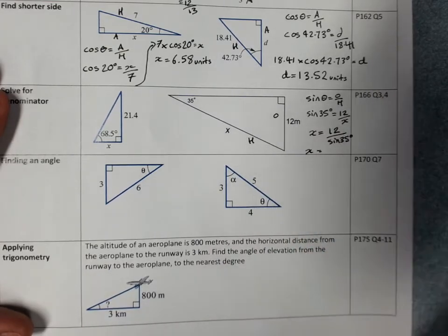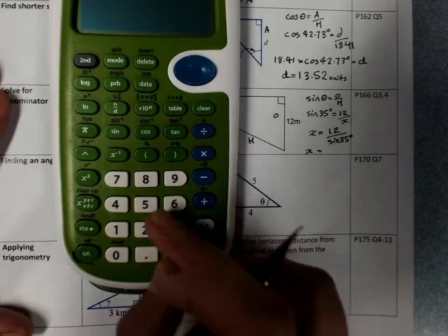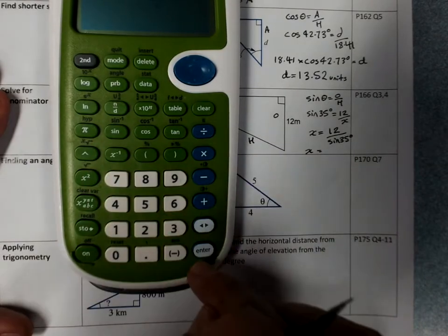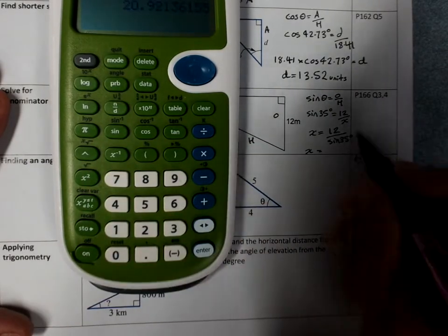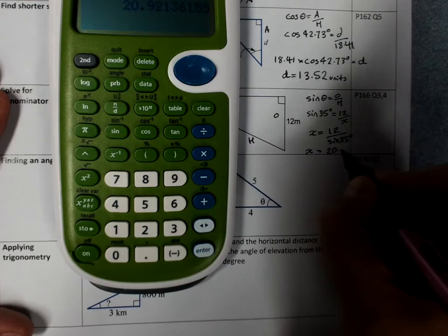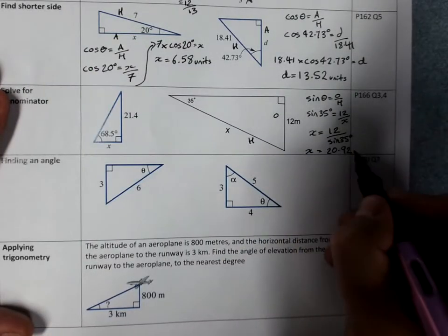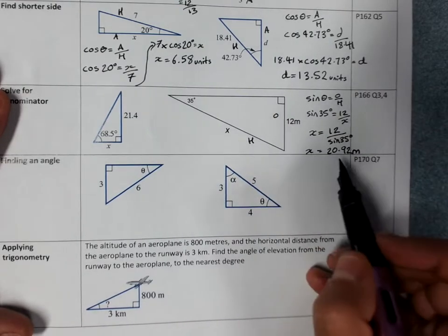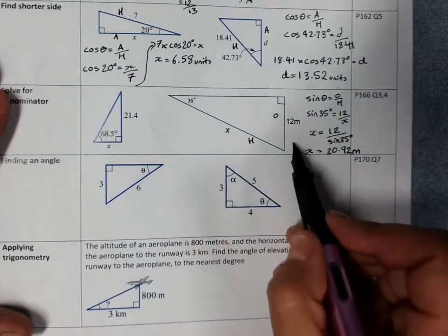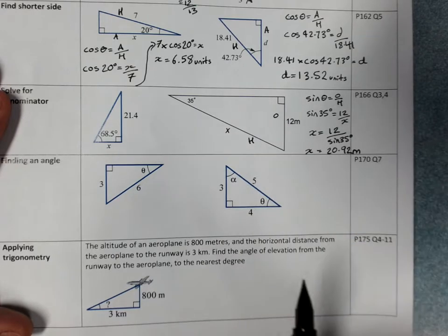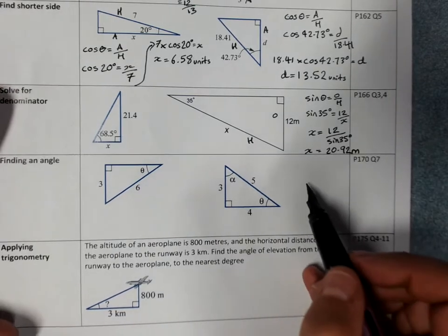Then we know what we're typing into our calculator. 12 divided by sine 35, 20.92. And we're in meters here. So that's in meters. Quick double check that your hypotenuse is longer than the other side that you know. Yes, it is. It's just a bit of an idiot check there.